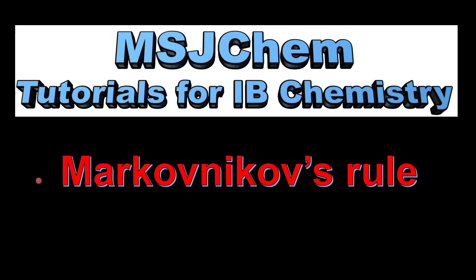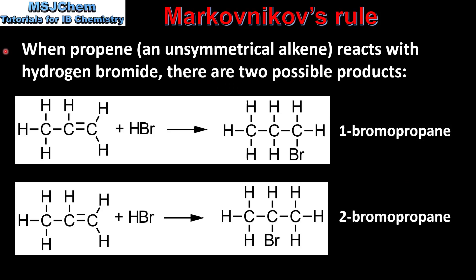This is MSJChem. In this video I'll be looking at Markovnikov's rule. When propene, which is an unsymmetrical alkene, reacts with hydrogen bromide, there are two possible products.